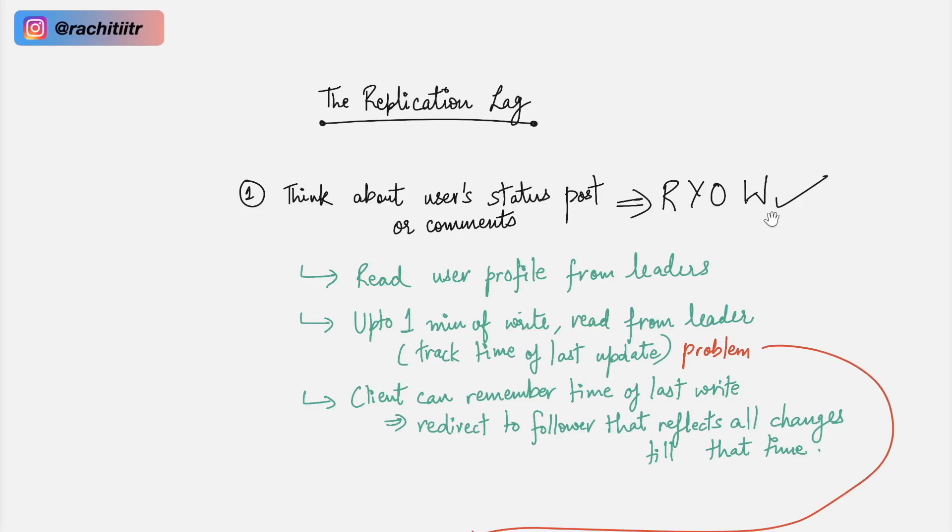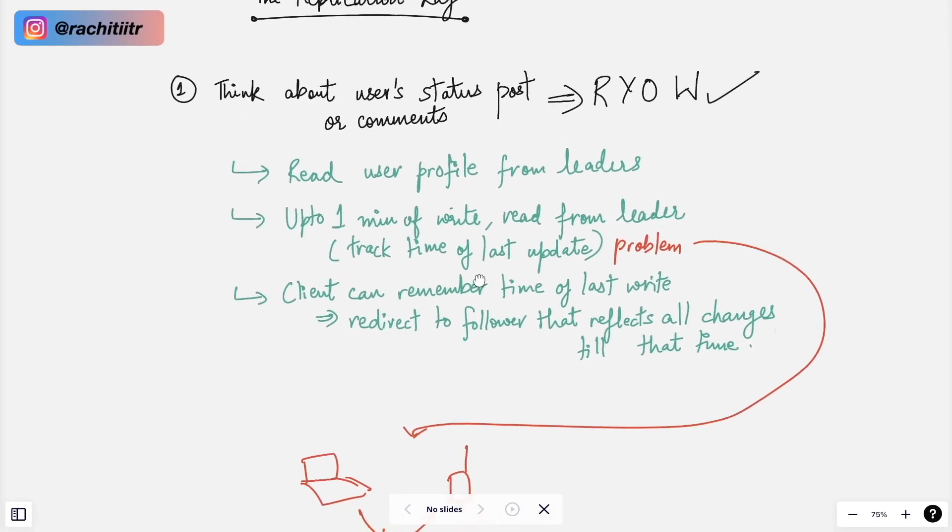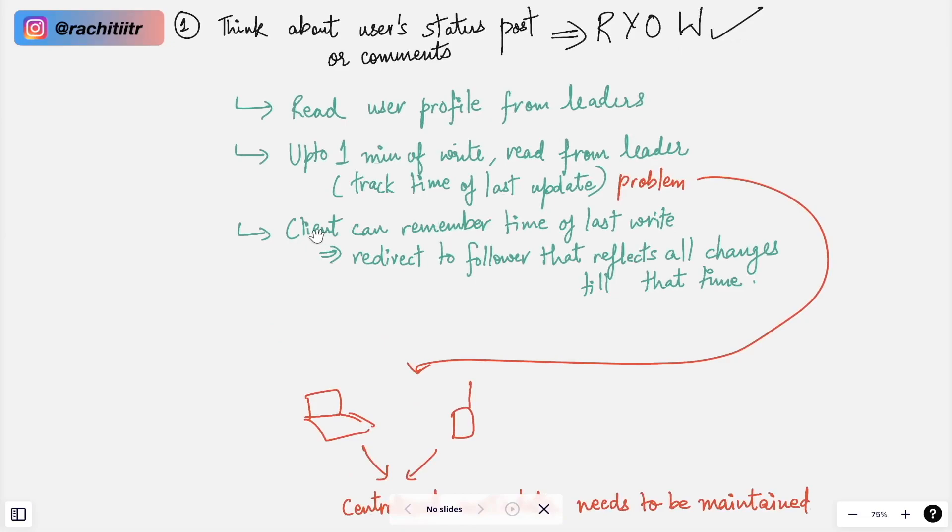An alternative strategy for this would be for one minute of the write you keep redirecting all the reads to the leader, and assuming that in one minute all the replicas are in sync, now you can do the reads from other replicas. The last strategy that I also want to discuss over here is the client themselves can remember the time of their last write, and now you can redirect all the reads to the followers that reflect all the changes till that time.